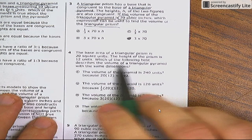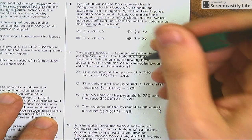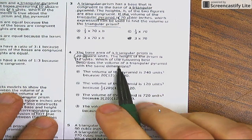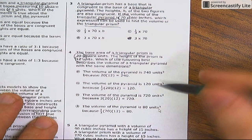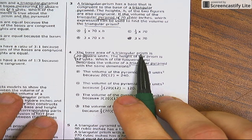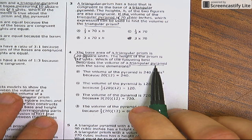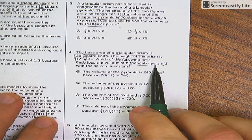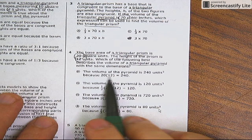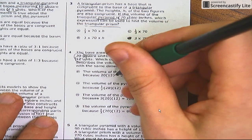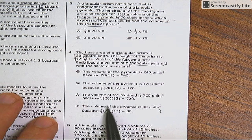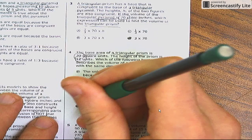Number four: The base area of a triangular prism is 20 square units. The height of the prism is 12 units. Which of the following best describes the volume of a triangular pyramid with the same dimensions? Okay, I'm going from prism to pyramid, so I have to divide by three. Let's see. Oh, there's the one-third right there, nothing else has it. This one says 20 times 12, right? No, one-third. This one says half of 20 times 12—nope. This one says three times 20 times 12—nope. One-third of 20 times 12. Hey, perfect. There we go, awesome.